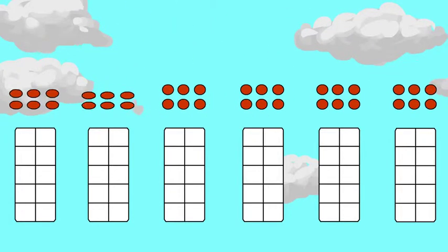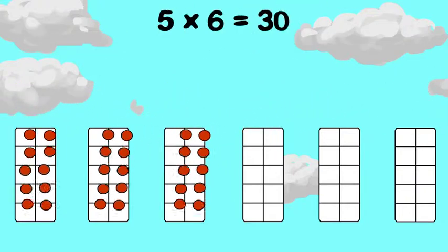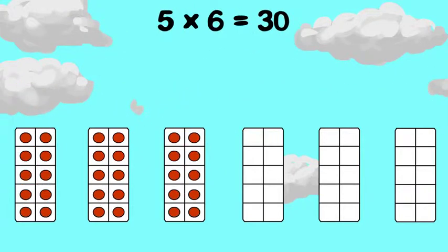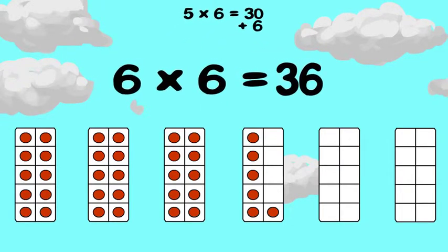Let's try six times six. You know that five times six is thirty. Now add a group of six. Thirty plus six is thirty-six. So six times six is thirty-six.